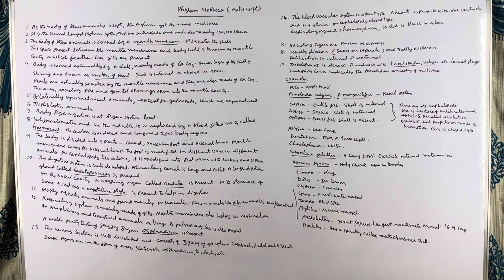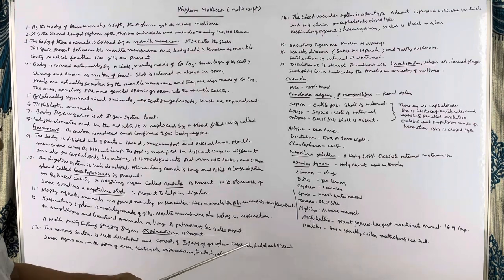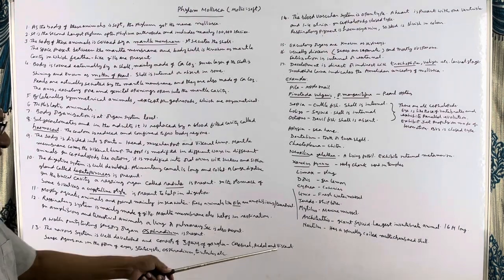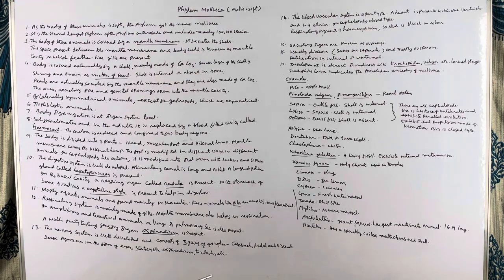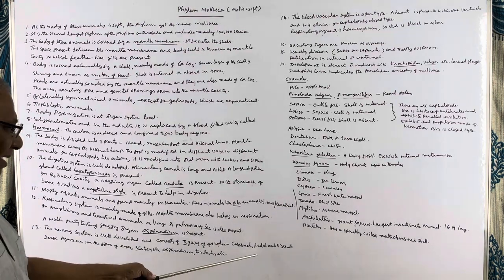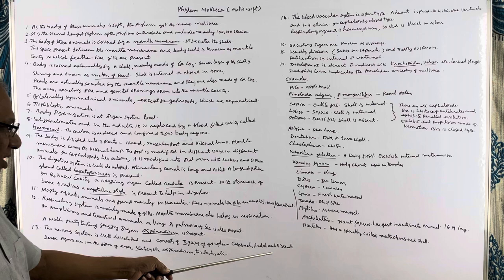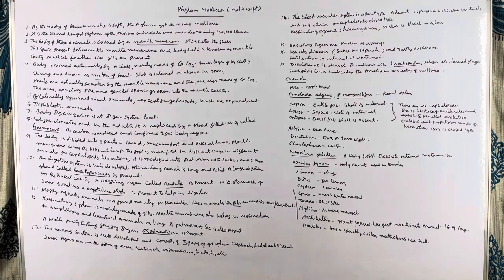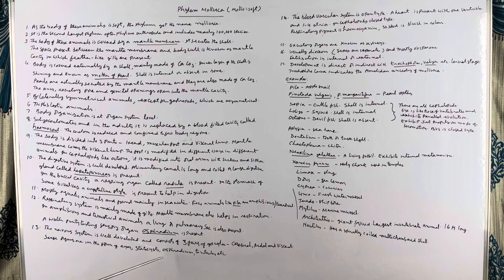The nervous system is well developed and consists of three pairs of ganglia: cerebral ganglia, pedal ganglia, and visceral ganglia. Cerebral ganglia are present in the head, pedal ganglia in the foot, and visceral ganglia in the visceral hump. Sensory organs are also present in the form of eyes, statocysts, osphradium, tentacles, etc.